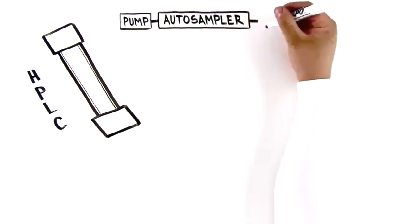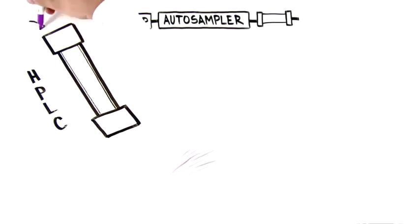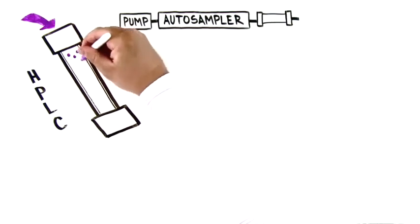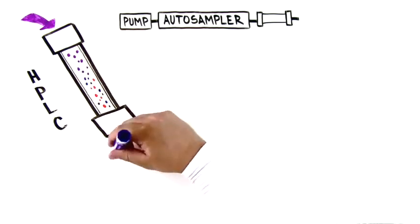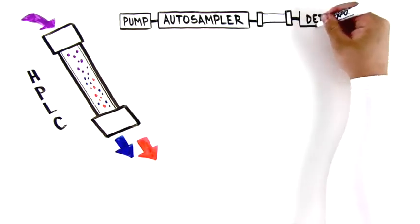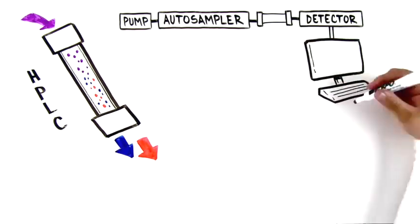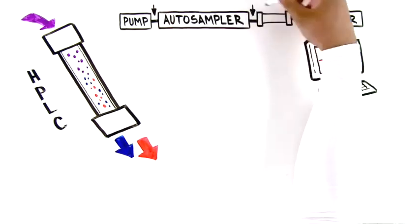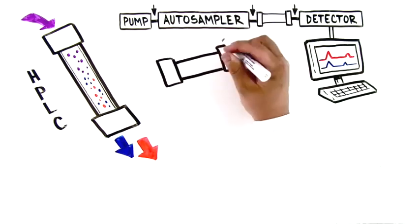After the pump, the eluent passes first the autosampler where the samples are injected on the column. The sample is then separated in the column. Finally, the detector measures the compounds. All these different modules of an LC system need to be fluidically connected by some tubing.